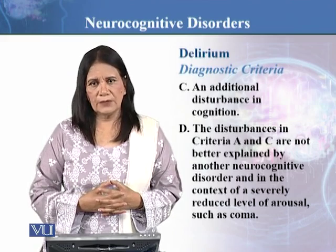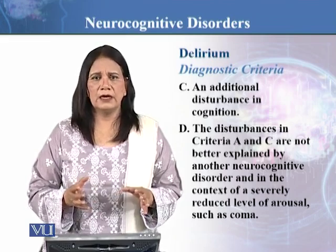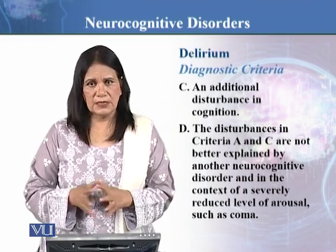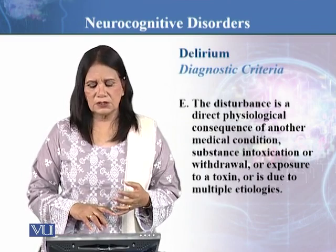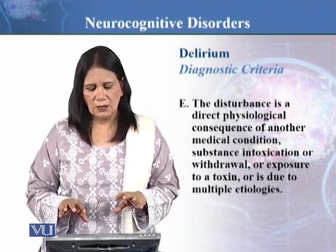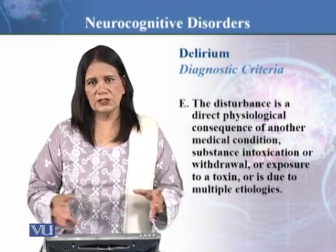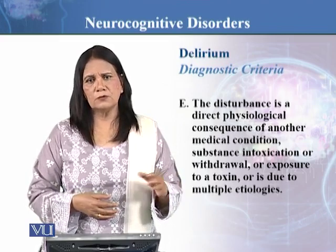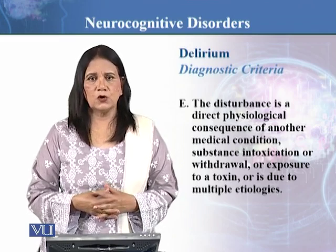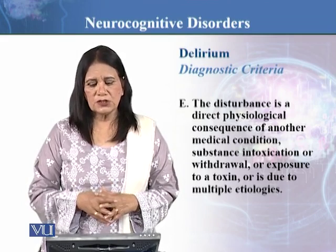It has to be demarcated that patients who come out of coma — who are on a ventilator or in coma — when they wake up, they would be seen to be in a confused state. But this has to be ruled out. Criterion E states that the disturbance is a direct physiological consequence of another medical condition, substance intoxication or withdrawal — when they are leaving the drug — or exposure to a toxin, meaning if the person has ingested something poisonous. Or it is due to multiple etiologies. So that was about delirium.